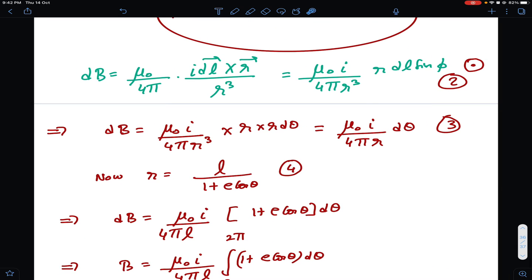So this becomes (μ₀i/4πr³), this is as it is, then r dl sin φ. So r comes as it is, and dl sin φ I have written as r dθ, as I showed here. If you simplify this, this becomes (μ₀i/4πr) dθ.